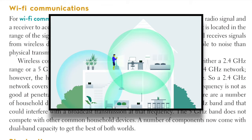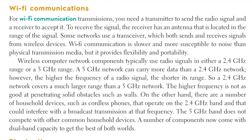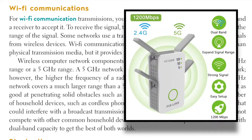The higher frequency is not as good at penetrating objects or obstacles such as walls. On the other hand, there are a number of household devices such as cordless phones that operate on the 2.4 GHz band, and that could interfere with a broadcast transmission at that frequency. The 5 GHz band does not compete with other common household devices. A number of components now come with a dual band capability to get the best of both worlds — for example, a Wi-Fi extender where you can choose between the 5 GHz or the 2.4 GHz setting.